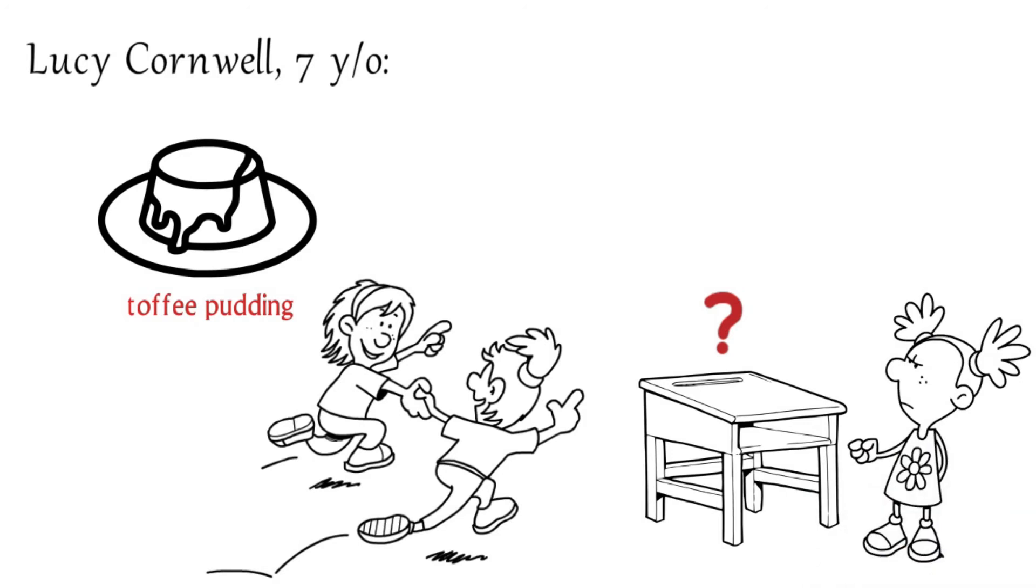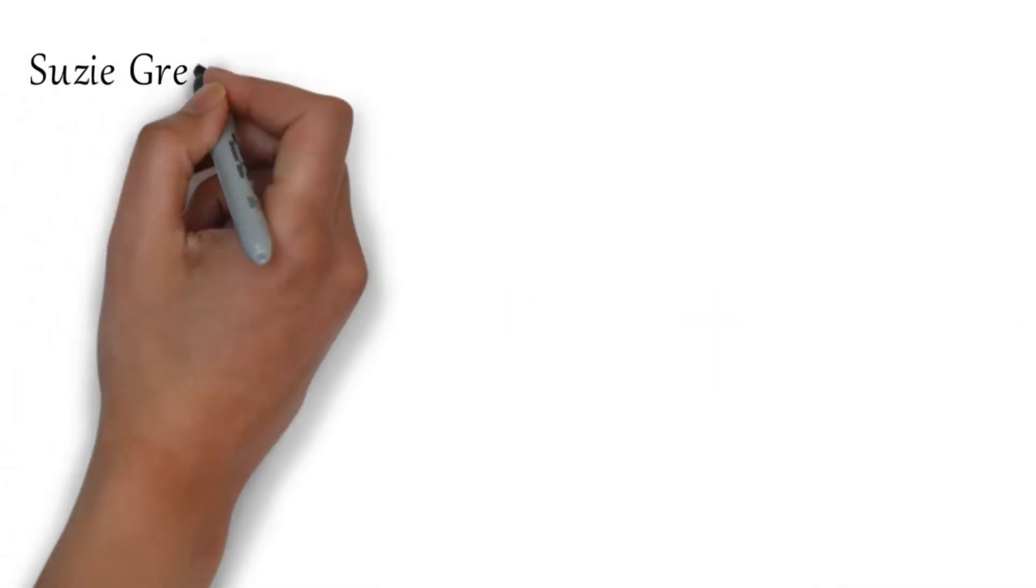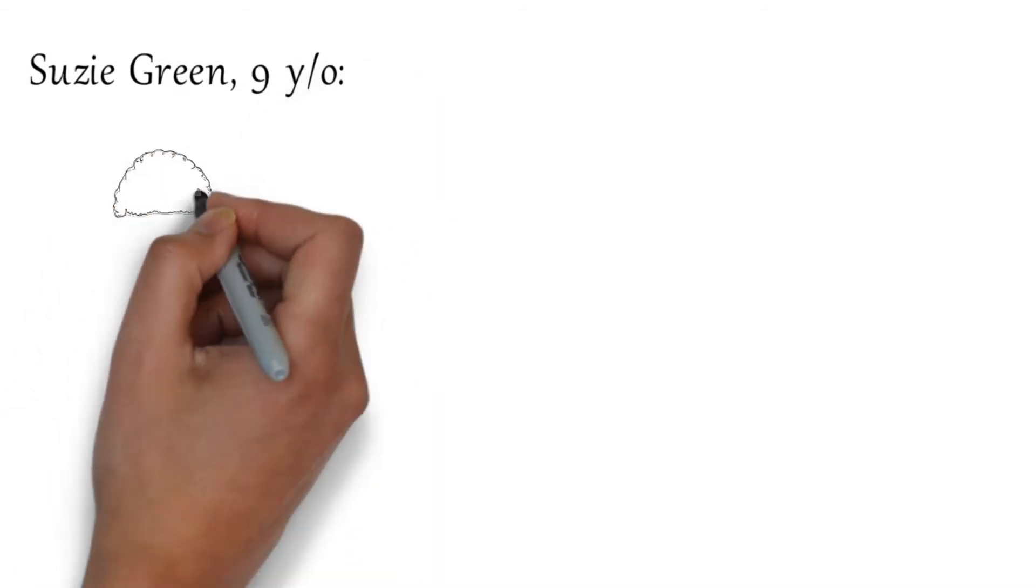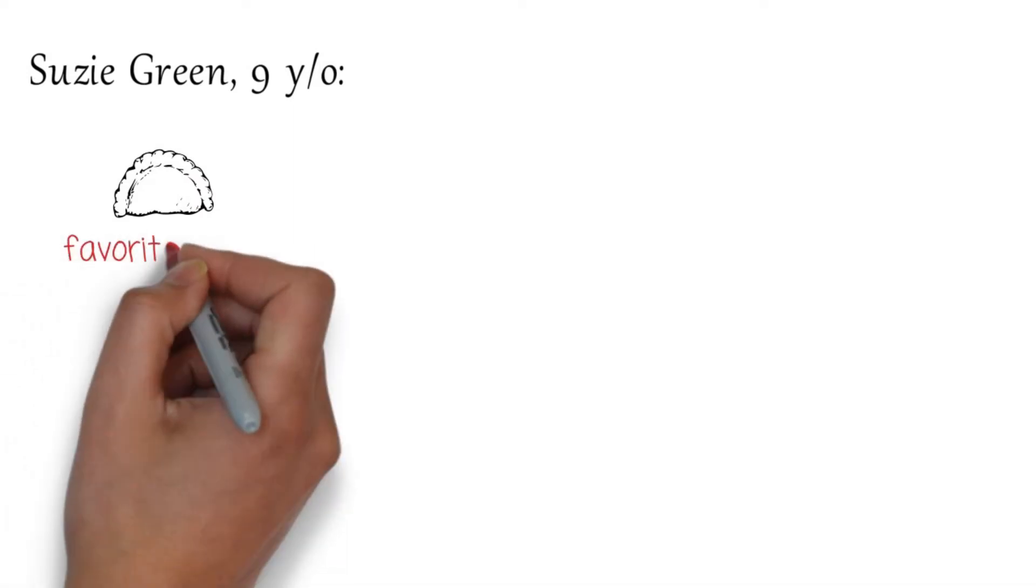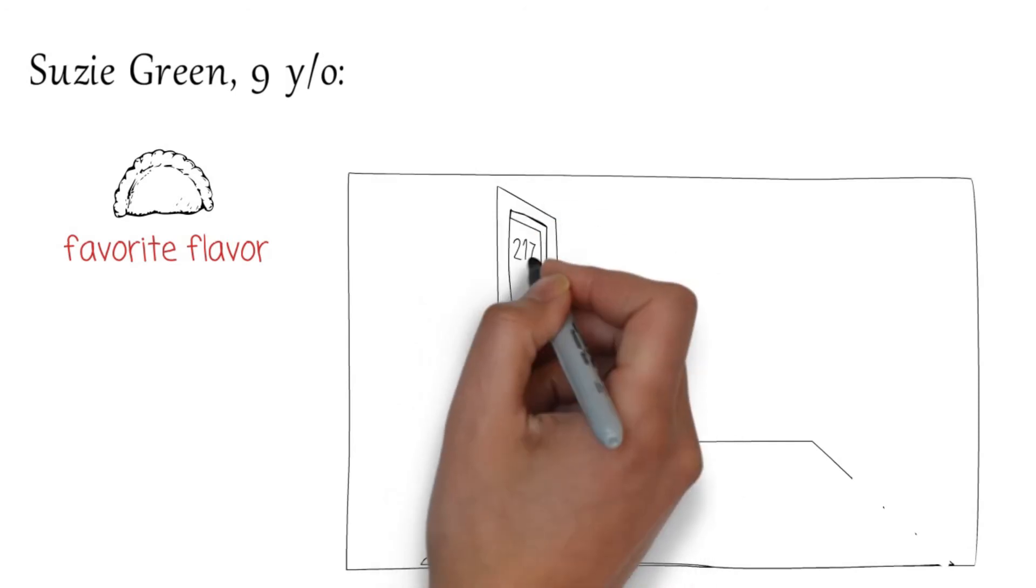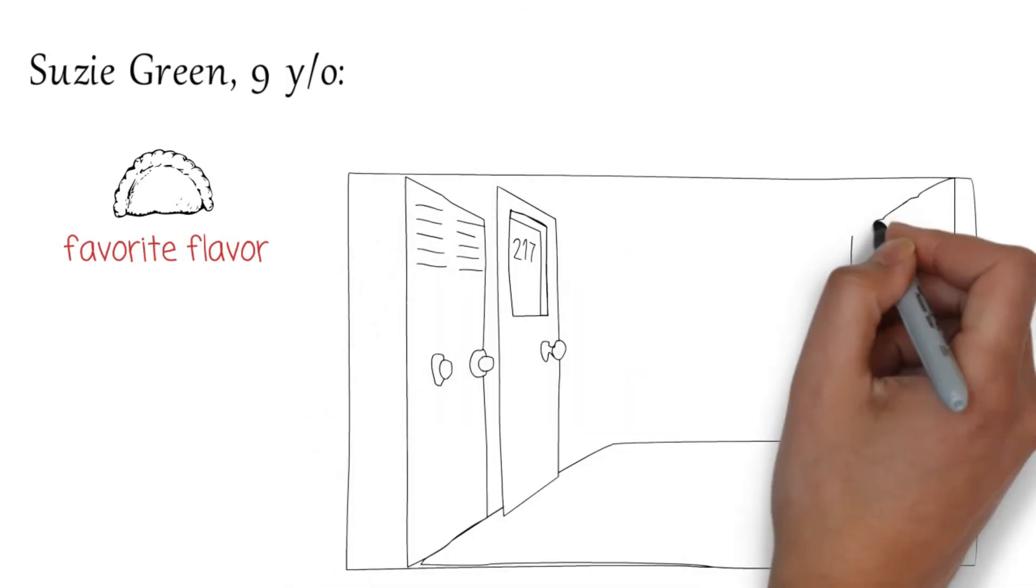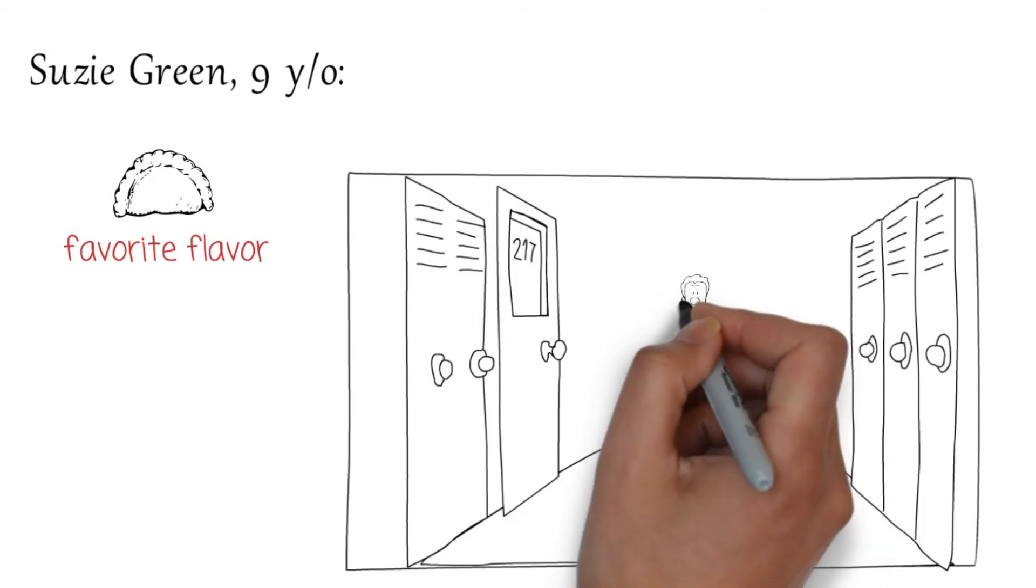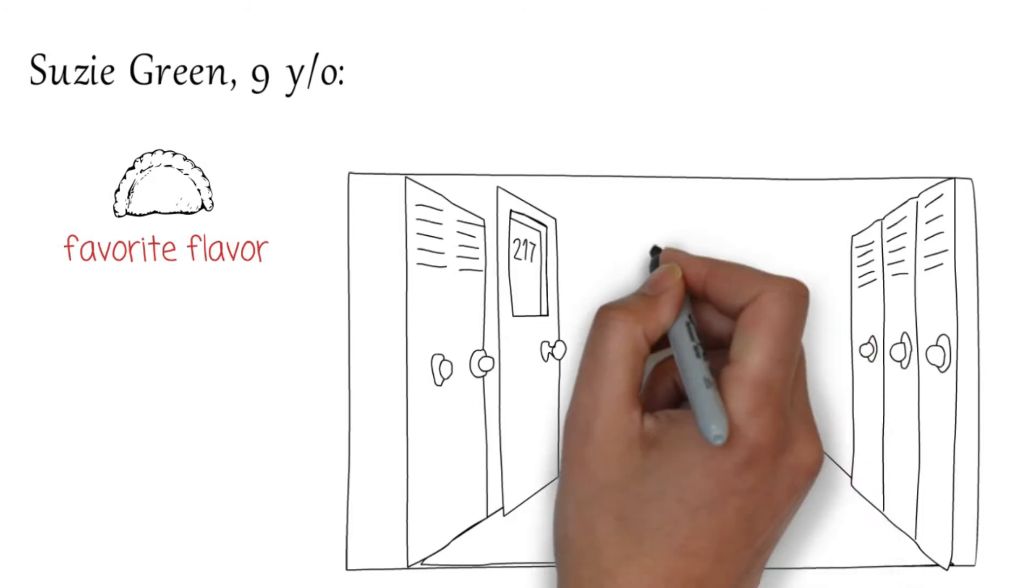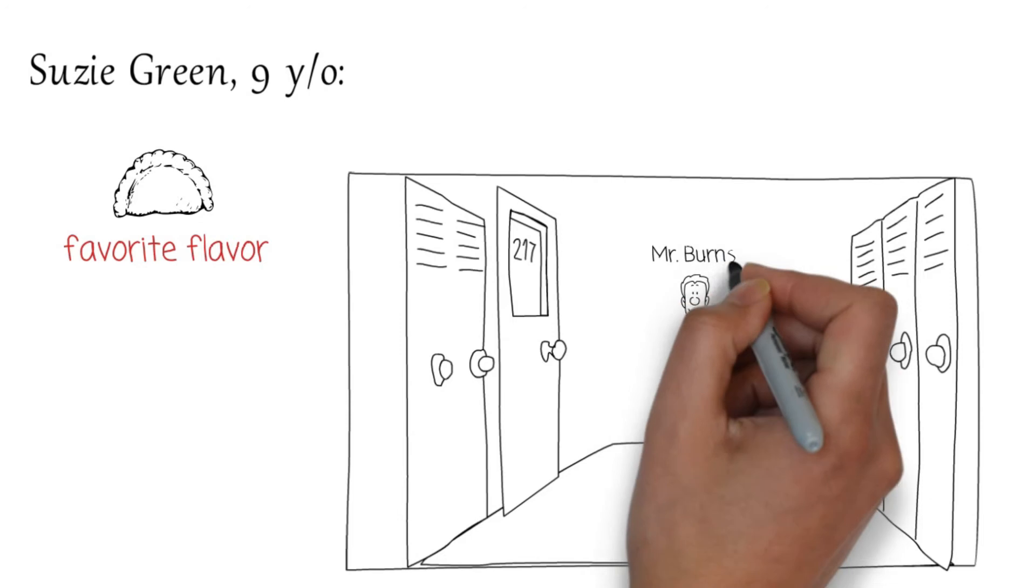Susie Green, 9 years old: Mommy brought me these pasties yesterday. They were left over from a work party. They're my favorite flavor. I was going to eat them with lunch but I couldn't find them anywhere. My lunch was in my locker while I was in class. I forgot to lock it in. When I went to get my lunch my pasty was missing. Mr. Burns was the hall monitor that day and he said he didn't see anyone.